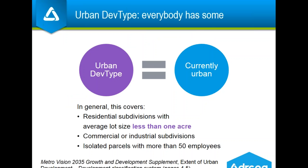Urban dev type means land that's currently urban. In this context, 'urban' means subdivisions with lots averaging less than one acre in size, as well as commercial and industrial subdivisions, and other parcels with larger businesses. That covers a very wide range of development across our region, which means practically that nearly every jurisdiction has some urban dev type, even if the term 'urban' carries little resonance in your community. The development classification system begins on page four of the Metro Vision Growth and Development Supplement, which should be one of the files available as a handout.